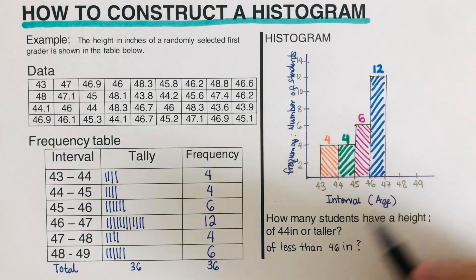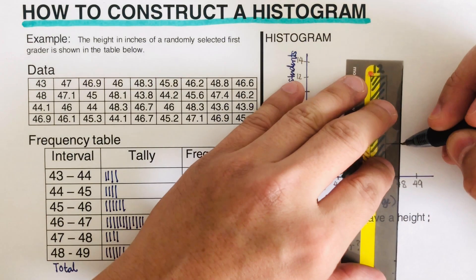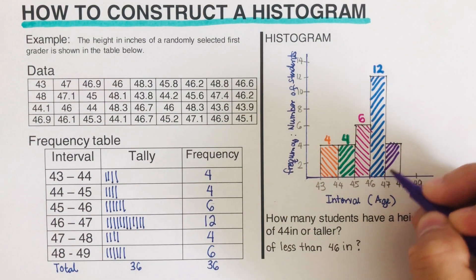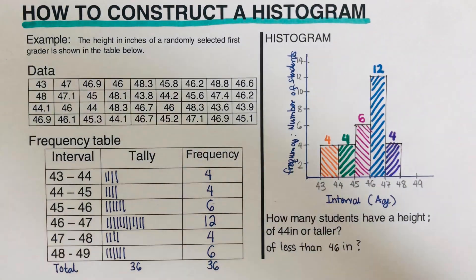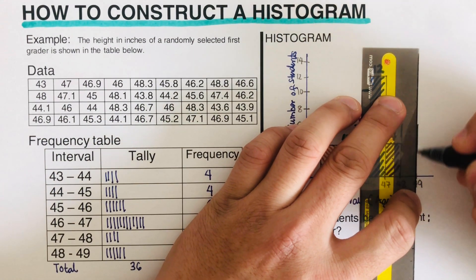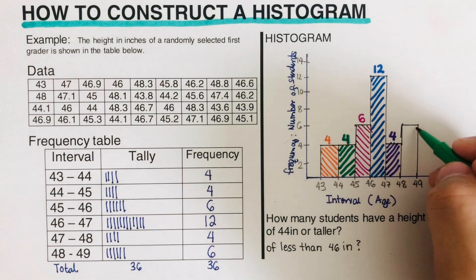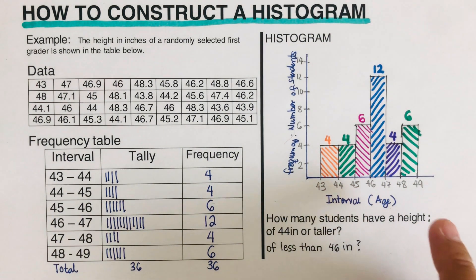The last interval, 48 to 49, has a frequency of 6, so that rectangle goes up to 6. I color and label it 6. This completes what we call the histogram.